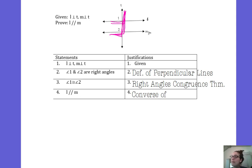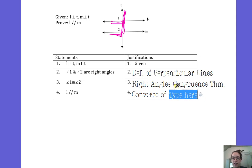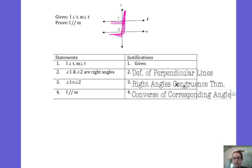Because angle 1 and angle 2 are corresponding and they're congruent, that means line L and line M have to be parallel. If L and M were not parallel, then angle 1 and angle 2 could not be congruent. Because they are corresponding and congruent, I can use the Converse of the Corresponding Angles Postulate.